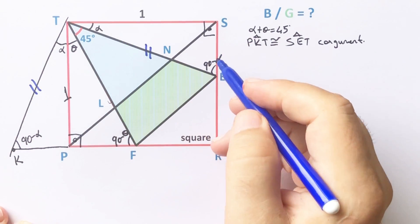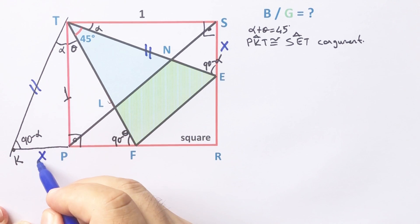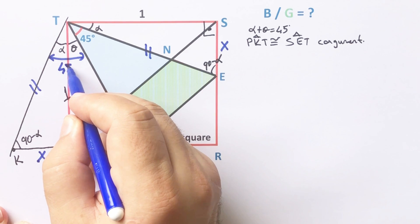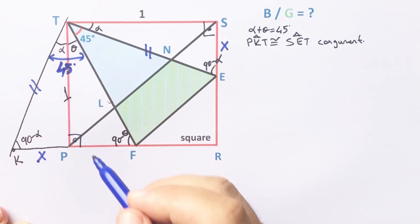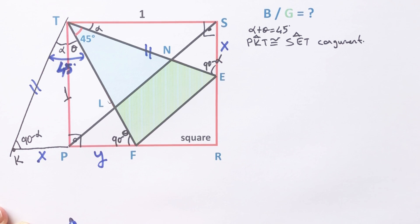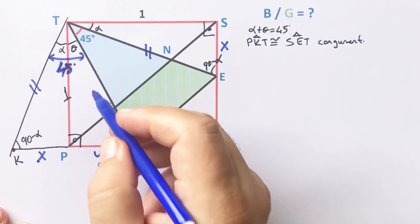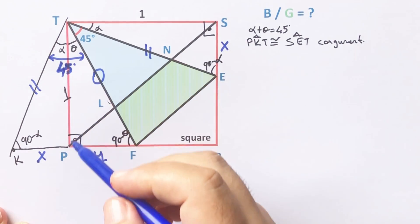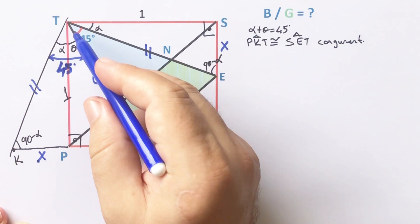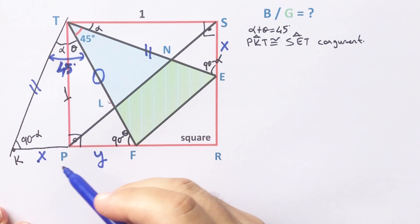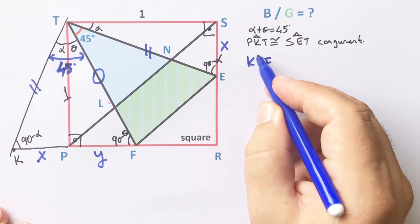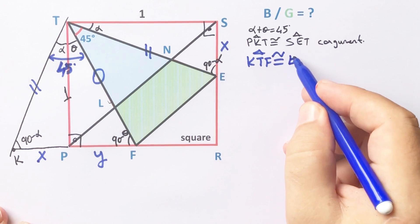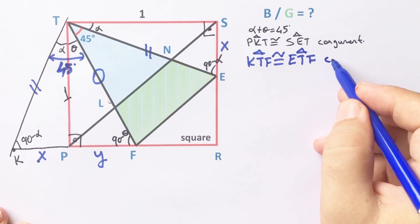If there is an x unit opposite alpha, then the side opposite alpha must be x unit. This angle is 45 degrees, and let's call this side y units. Notice the double-line and circle markings — double line, circle, and 45 degrees — that means these two triangles are congruent. Triangle KTF and triangle ETF are congruent according to the Side-Angle-Side theorem.